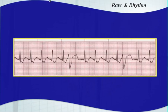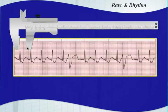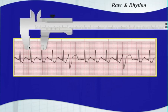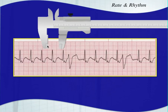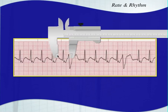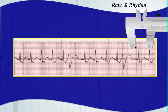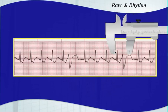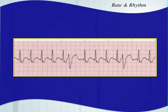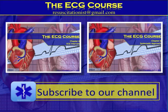One last one — let's see if the underlying rhythm is regular. Measuring it out, it looks pretty regular. Then you have a beat, followed by one, two, three, four normal complexes, then another extra beat. The underlying rhythm is regularly regular, but you have these slight irregularities. When we identify this type of ectopy, it won't really interfere with your ability to interpret the EKG rhythm.